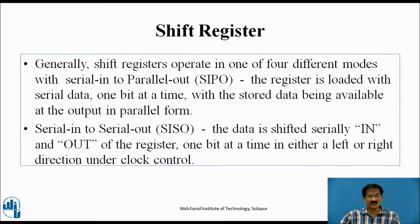Generally, shift registers operate in one of four different modes. In Serial In Parallel Out (SIPO), the register is loaded with serial data one bit at a time, with the stored data being available at the output in parallel form. In Serial In Serial Out (SISO), the data is shifted serially in and out of the register one bit at a time, in either left or right direction, under clock control.